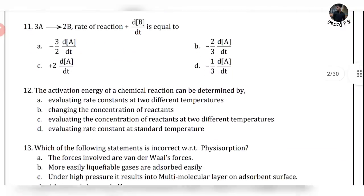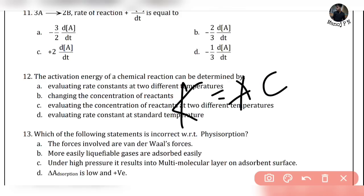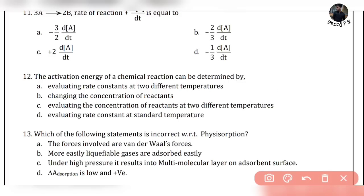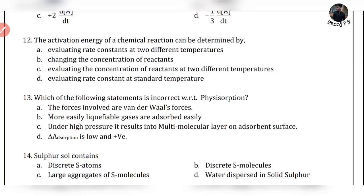Twelfth question — activation energy of a chemical reaction can be determined using the Arrhenius equation: k = A × e^(−Ea/RT), where k is the rate constant. To determine activation energy, you evaluate rate constants at two different temperatures. If you have rate constants at two different temperatures, that is how you calculate activation energy.